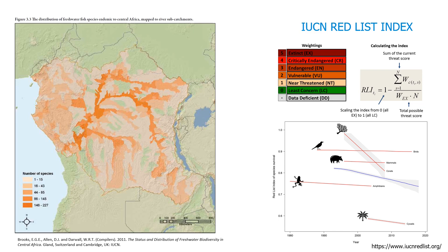Without going into detail here, for any particular taxonomic group, the index gives a score of the expected risk of extinction compiled for all the species in that group, ranging from 0, where all the species are extinct, to 1, where there is no threat to the species. This index is repeated at regular intervals, and hence you can measure the overall trends in changing risk of extinction for that group of species.